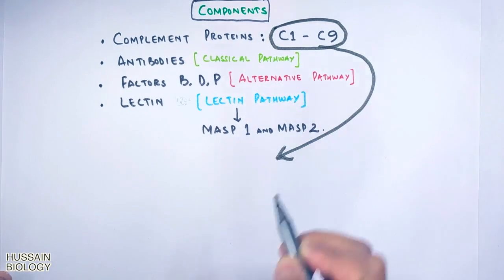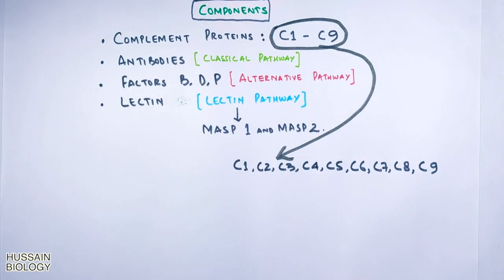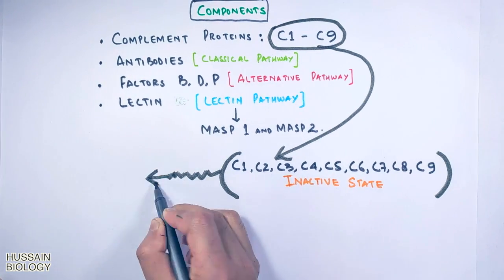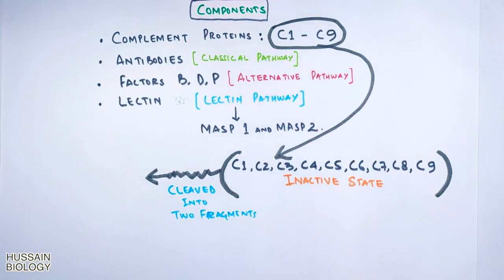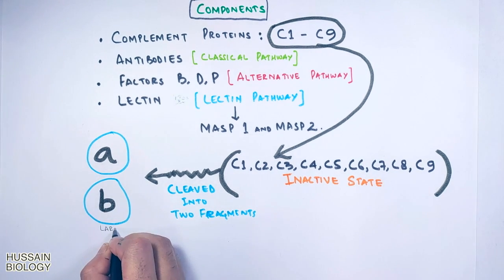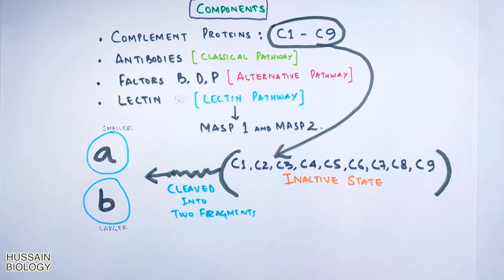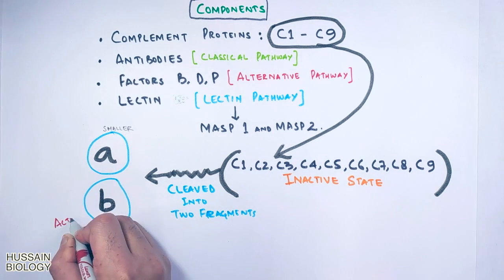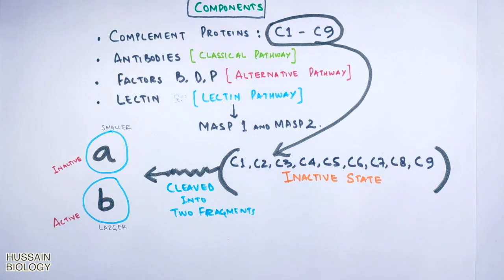The proteins from C1 to C9 are in inactive state before fixing the complement to make them active. These C proteins are cleaved into two fragments A and B. In most cases the B fragment is the larger and active C protein while the smaller A fragment is inactive.